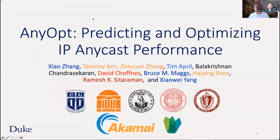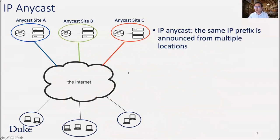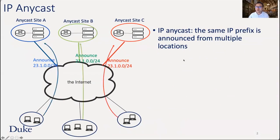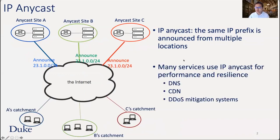IP Anycast is a routing mechanism that allows routers to announce the same IP prefix from multiple different locations — each location is referred to as an Anycast site. Each site has an on-site router and servers that receive client traffic. Different client traffic destined to the Anycast prefix may reach different sites based on BGP routing policy; we refer to the set of clients that reach a site as the site's catchment. Anycast is used by many geo-replicated services such as DNS root name servers, CDNs, and DDoS mitigation services.